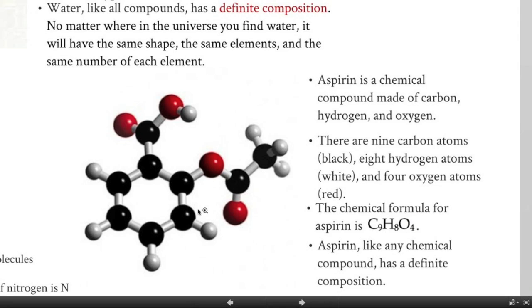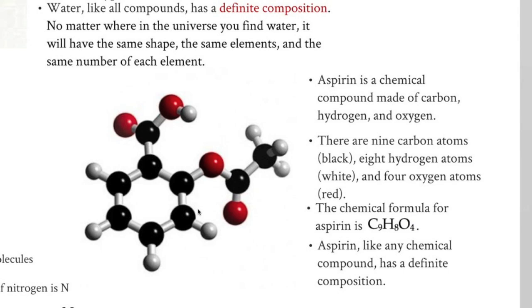Aspirin, like any chemical compound, has a definite composition. This is actually a fundamental aspect of atomic theory. No matter where in the universe I find aspirin, it's going to have this shape, this formula, and the same number of atoms in the same proportion. If I go to Rite Aid and buy some aspirin and analyze it, it's going to have nine carbons, eight hydrogens, and four oxygens. If I go to Walgreens across town and buy some aspirin and analyze it, it's going to have nine carbons, eight hydrogens, and four oxygens chemically bonded together. That's what I mean when I say that chemical compounds have a definite composition.